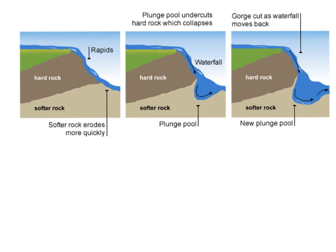Now let's revise how waterfalls are formed. First of all, at the very start, you have a layer of hard rock overlying a layer of softer rock with water flowing down over it. What's going to happen is the softer rock will get eroded quicker, and all of a sudden you have the very start of a waterfall. That gets eroded slightly more and more and you get what's called a plunge pool formed — that's one of the first key terms. We could also refer to more resistant and less resistant rock. And of course, all this is happening in the upper course of the river.